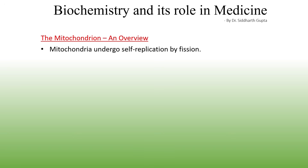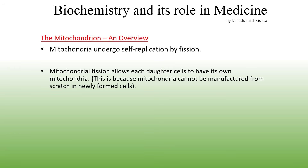Mitochondria have the ability to undergo fission as well as fusion. The main purpose of mitochondrial fission is self-replication. Fission is needed for mitochondrial replication because, unlike other organelles, new mitochondria cannot be built from scratch in daughter cells — instead they arise from pre-existing mitochondria.